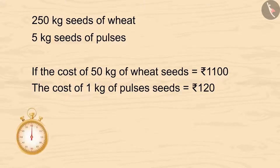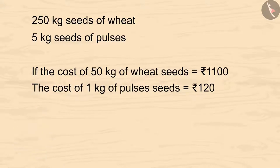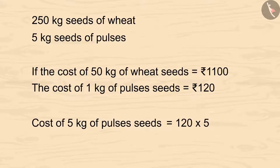Kids, you can pause the video and calculate it. The cost of 1 kg of pulses seeds is Rs. 120. So the cost of 5 kgs would be 120 multiplied by 5, which equals 600. Karim spent Rs. 600 on pulses seeds.